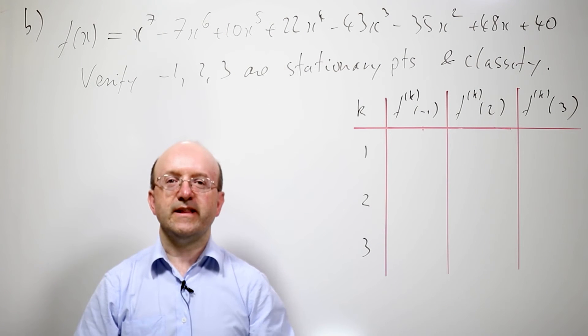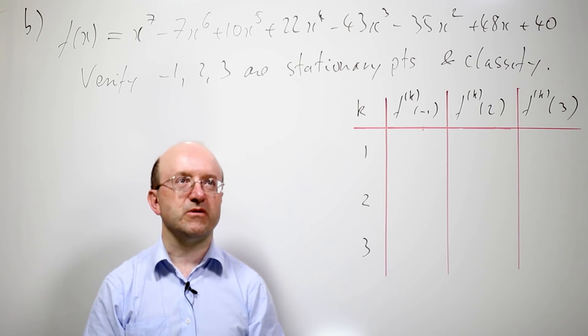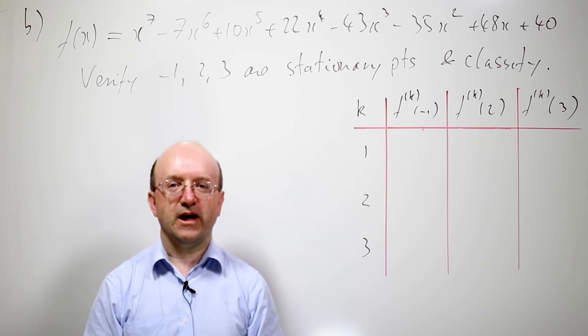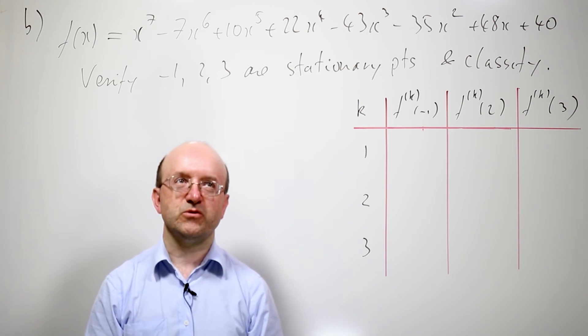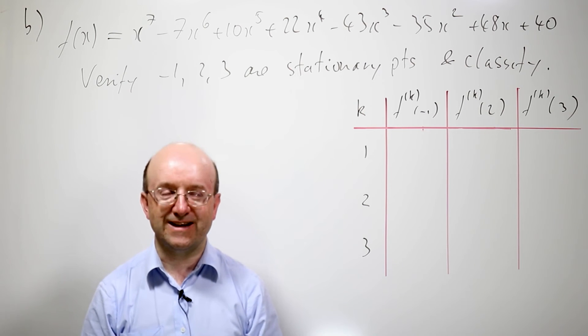Okay. Now, in this second part, we're going to look at yet another polynomial and again, classify its stationary points. So here we have, once again, a seven degree polynomial. And we're asked to verify that minus 1, 2, and 3 are stationary points, and then classify them, again, using the corollary to Taylor's theorem.